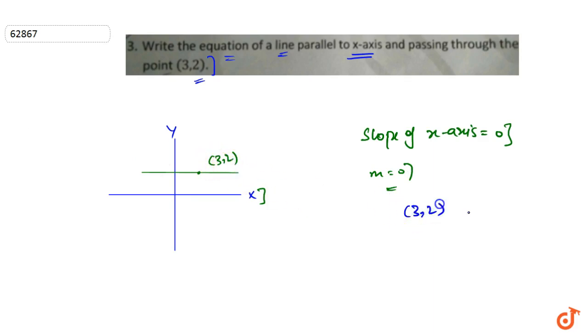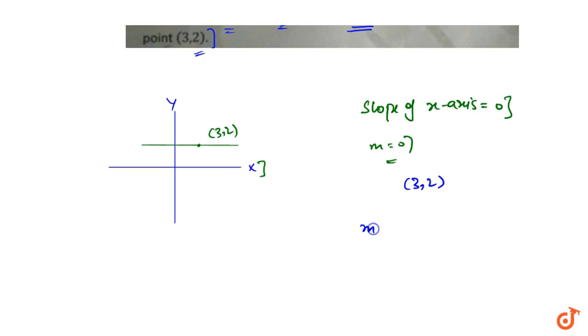Now we know that if we have slope given in line and some point given in line, then we have an equation of y - y1 equal to m into x - x1.